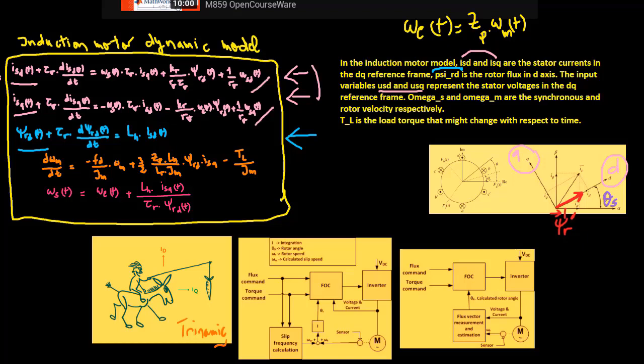The input variables usd and usq represent the stator voltages in the dq reference frame. ωs and ωm are the synchronous and rotor velocity respectively. TL is the load torque that might change with respect to time.